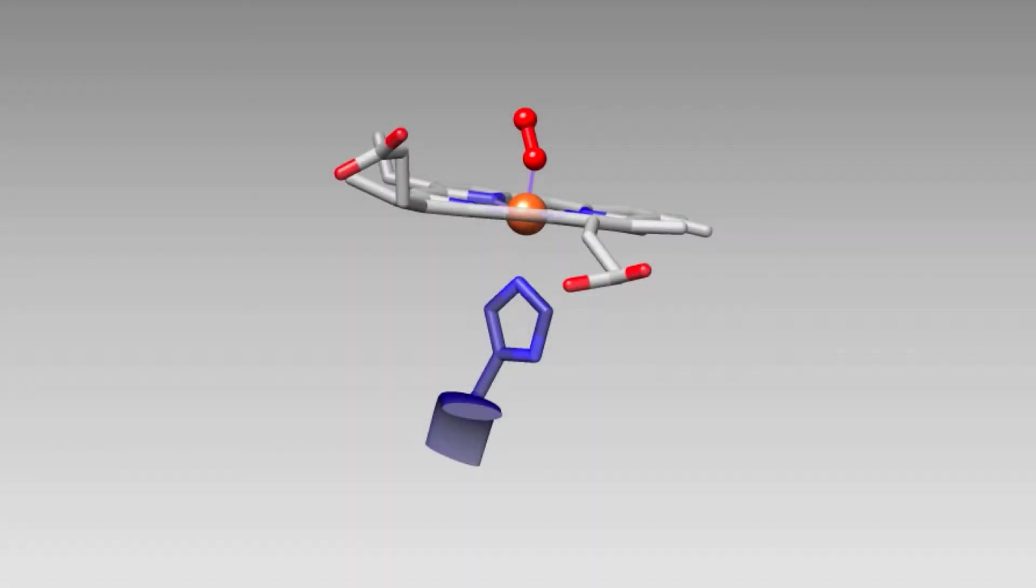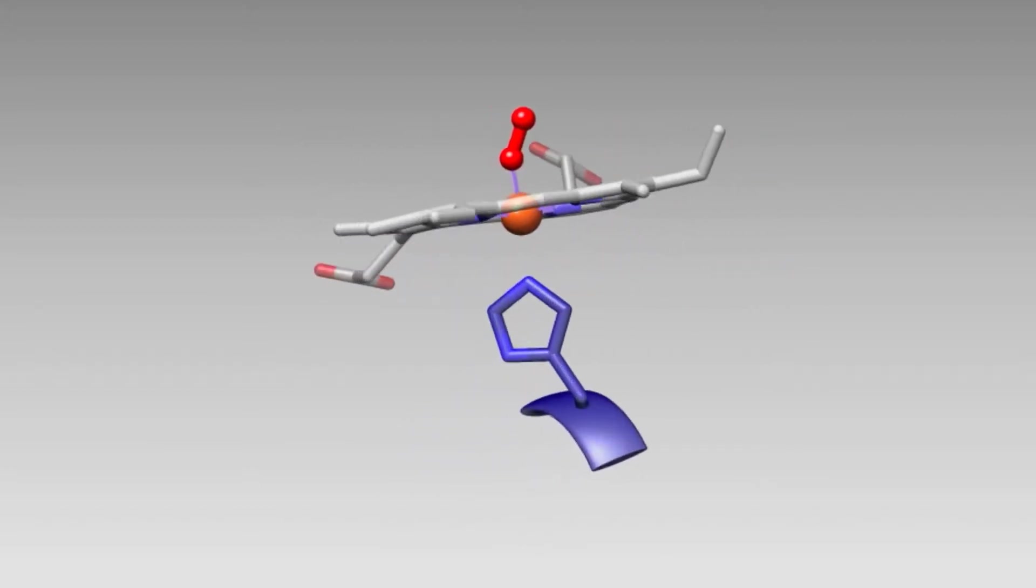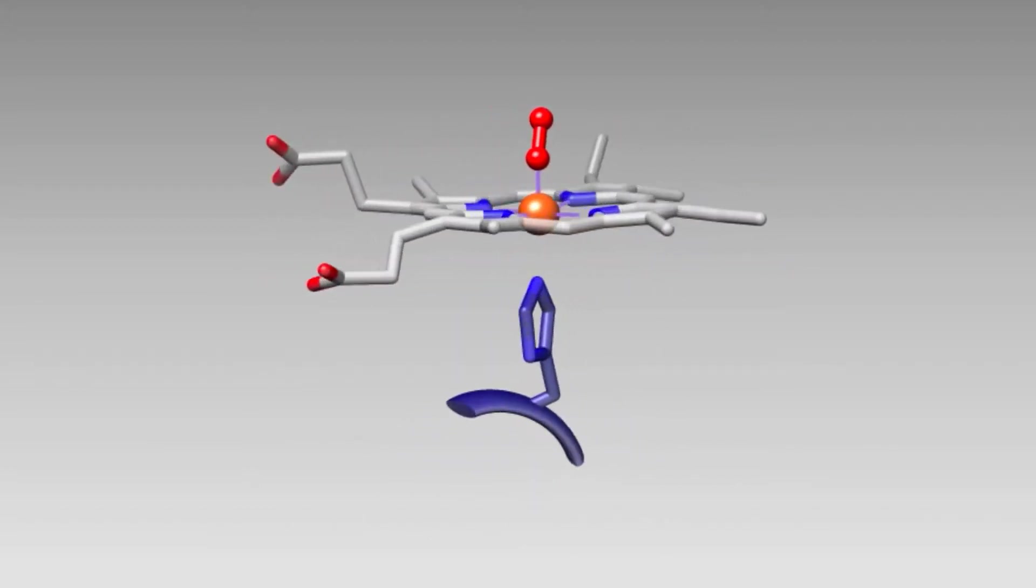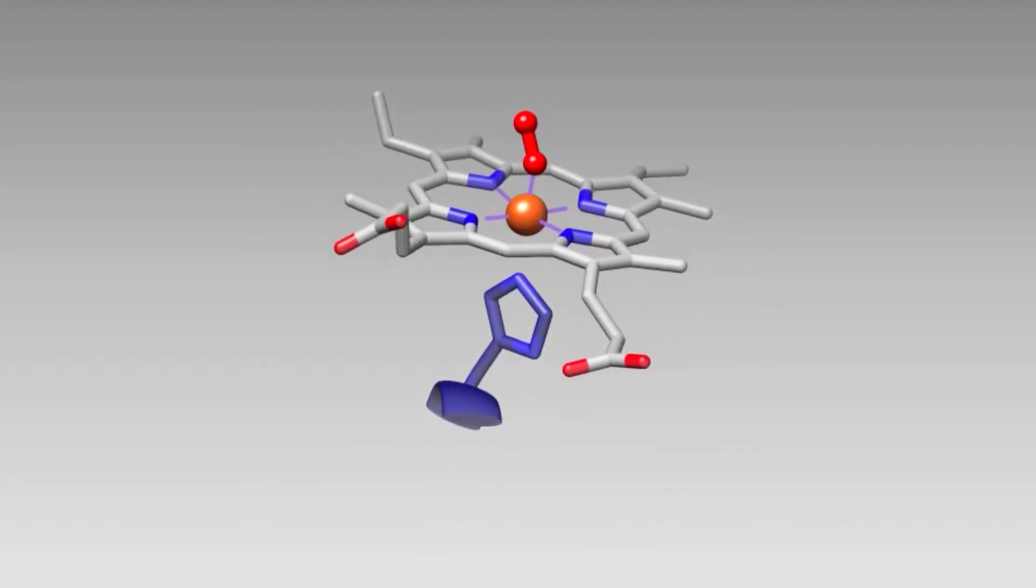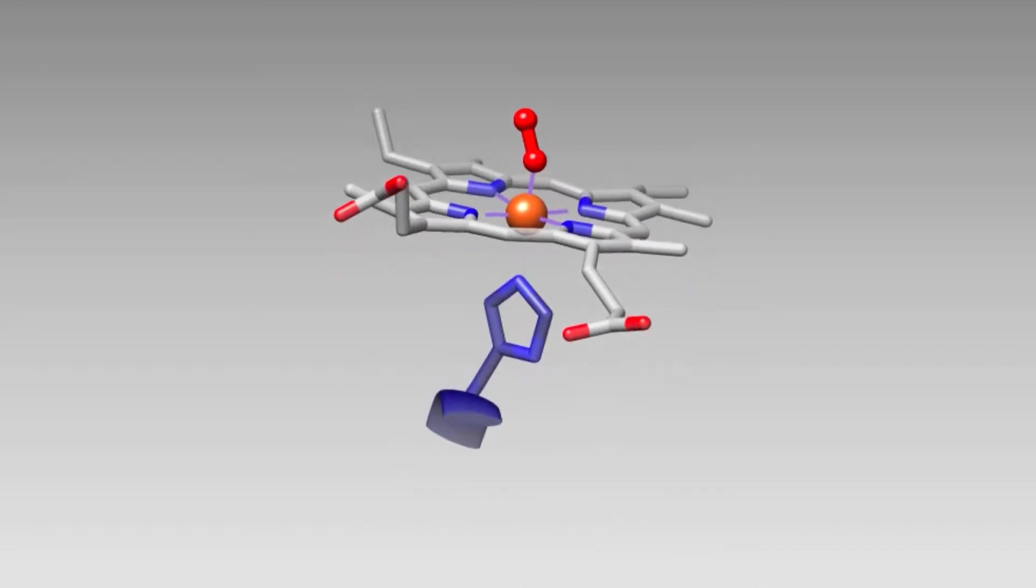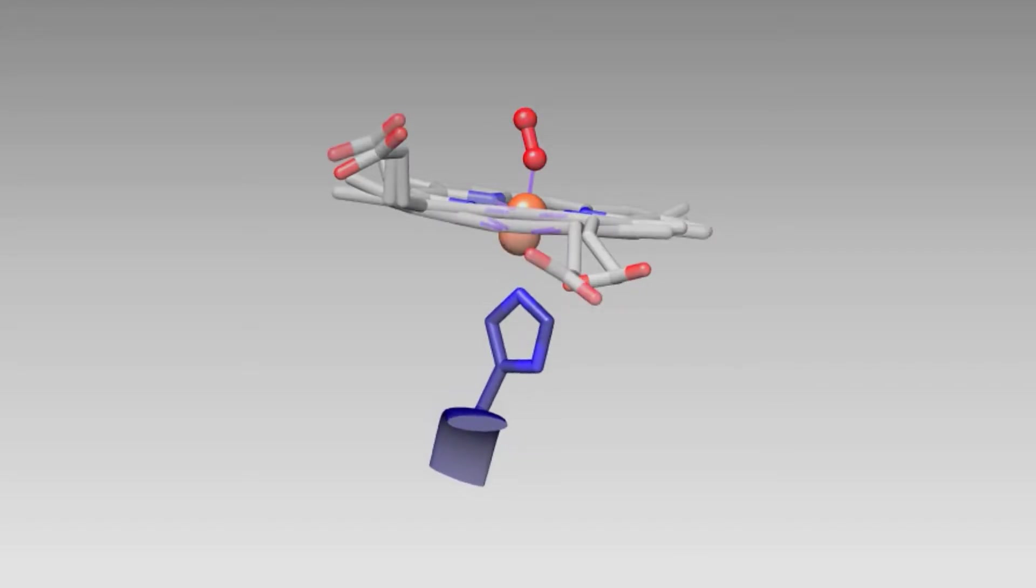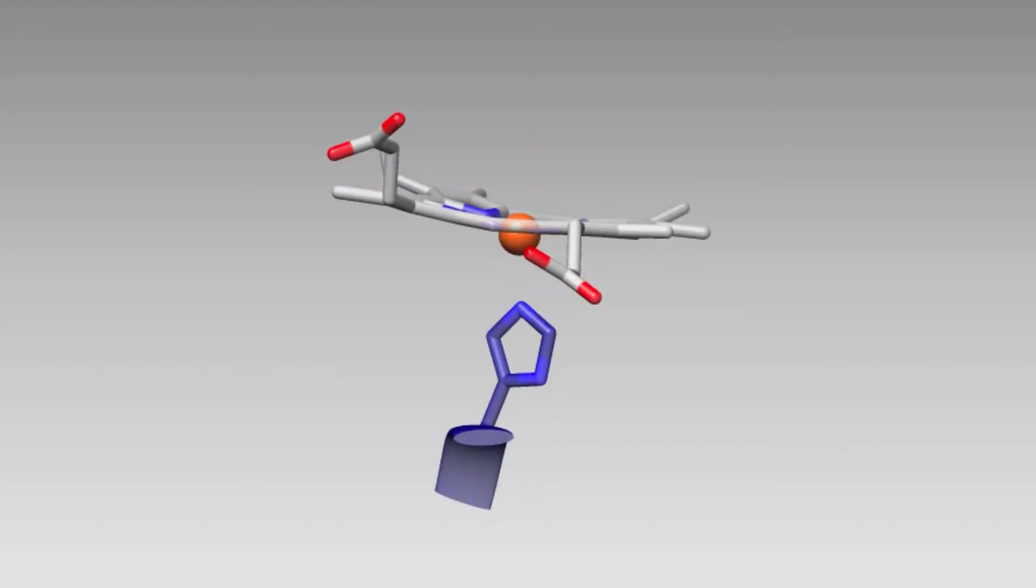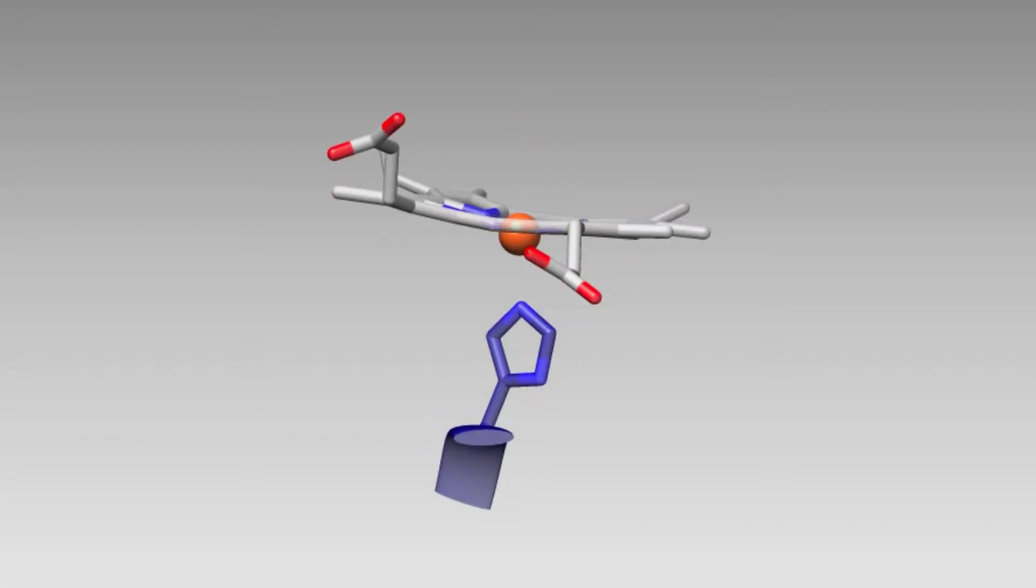In both myoglobin and hemoglobin, the iron center of the heme group carries out the important job of reversibly binding to oxygen. The heme group itself is a large aromatic protoporphyrin ring. The iron has a 2-plus oxidation state with six valence D electrons. During reversible binding to oxygen, the iron center alternates between five and six coordinate species and alternates between high spin iron 2 and low spin iron 2.